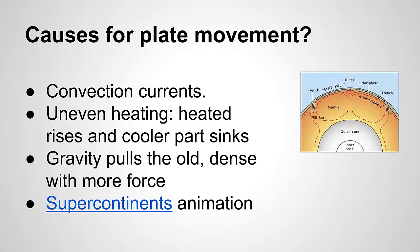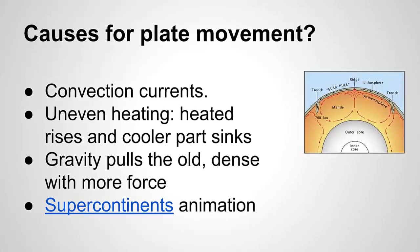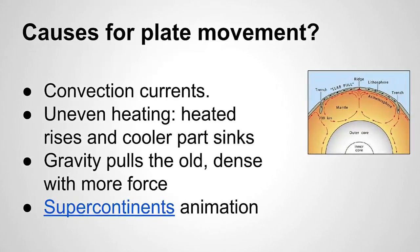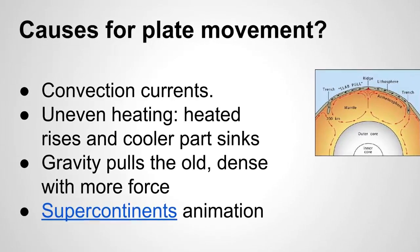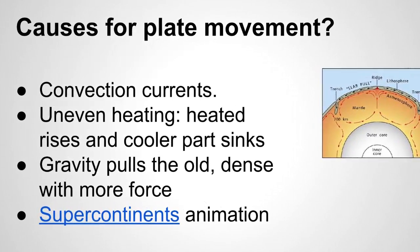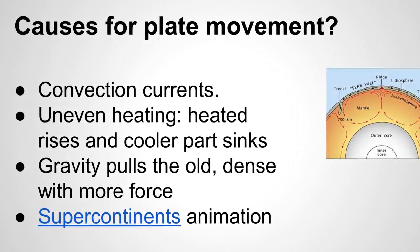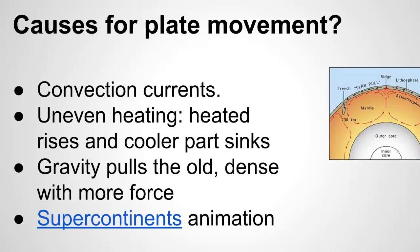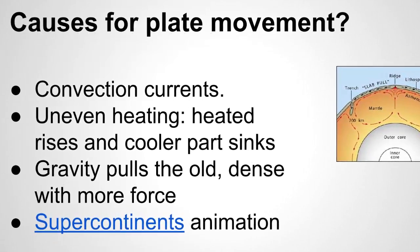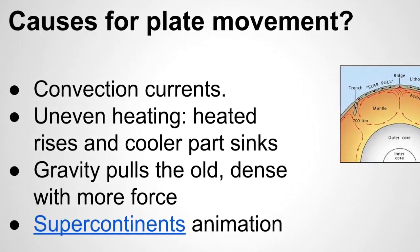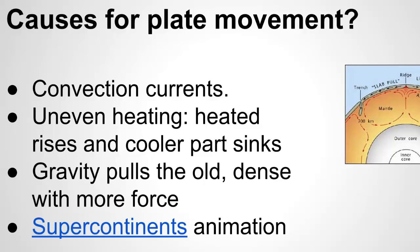Wegener had a similar idea to plate tectonics, but he could not explain the reason or cause for the plate movement — that was one of his big hang-ups. Convection currents in the mantle, we now think, are what are causing the plates to move apart.